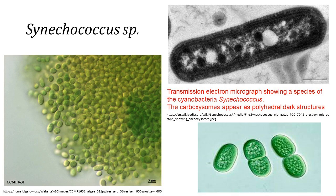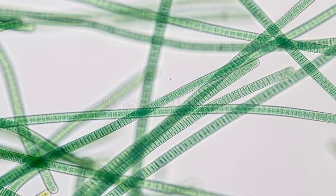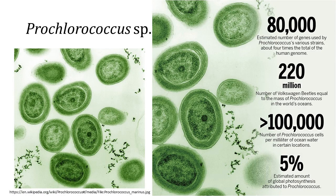Marine picocyanobacteria numerically dominate most phytoplankton assemblages in the modern oceans, contributing importantly to primary productivity. While some planktonic cyanobacteria are unicellular and free-living, others have established symbiotic relationships with haplophyte algae. Among the filamentous forms, some are free-living and some form aggregates. However, filamentous heterocyst-forming cyanobacteria are found in association with diatoms too. Marine cyanobacteria include the smallest known photosynthetic organism.